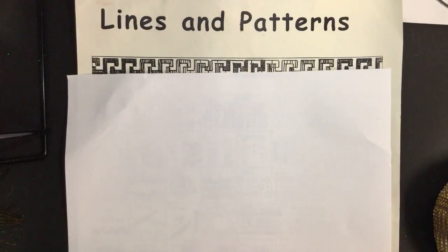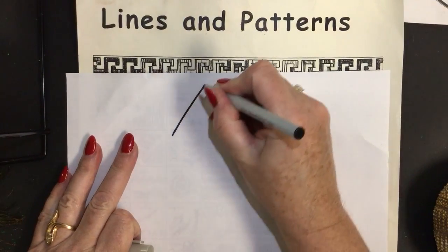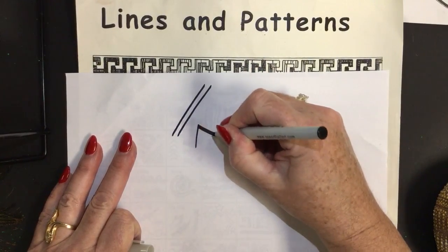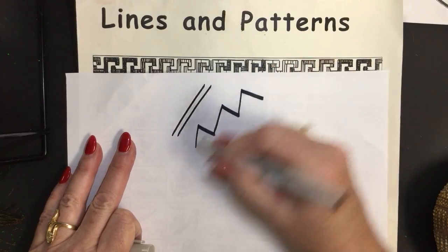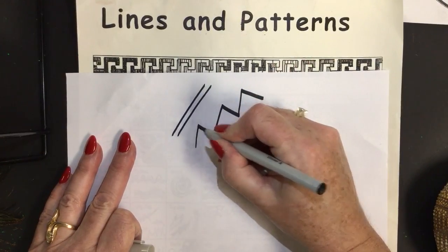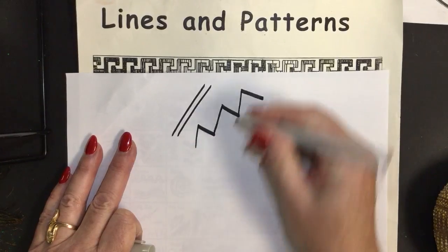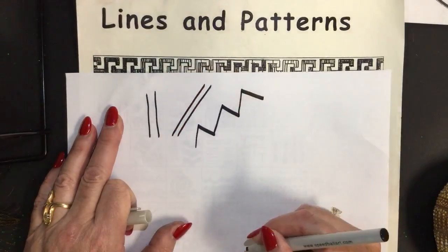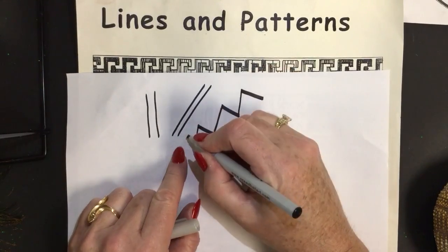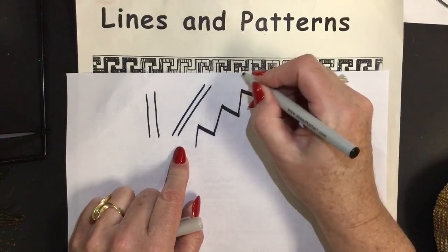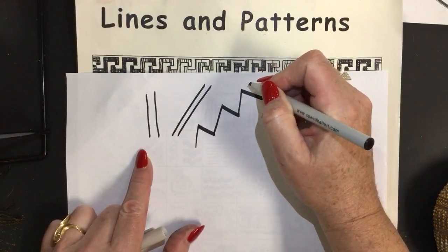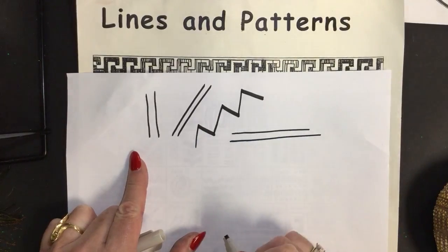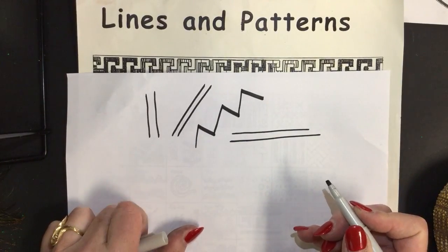We have straight lines and you can combine straight lines together. There are zigzag lines which are made up of straight lines that intersect and go in different opposite directions. We can have vertical lines going straight up and down, and this would be an example of a diagonal line. And we can do horizontal lines going across, and of course we can combine these kinds of lines.